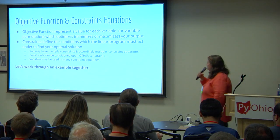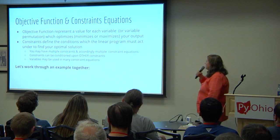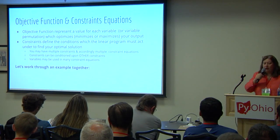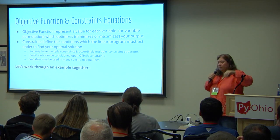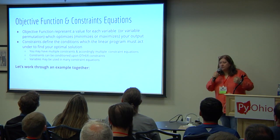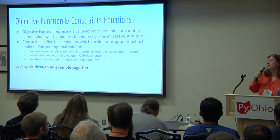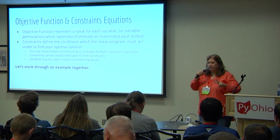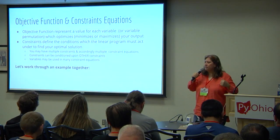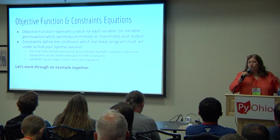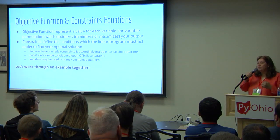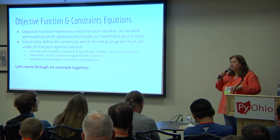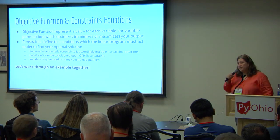The objective function represents a proxy value for every single possible permutation of an outcome. In our first example you'll just see two variables — cupcakes and cream puffs. But if there were three flavors of cupcakes and two kinds of cream puffs, there are more permutations. The constraints define the conditions under which the linear program must act to fulfill the objective, and as I said, you can have multiple constraints that are conditioned upon other constraints.